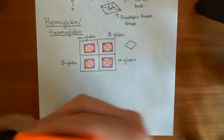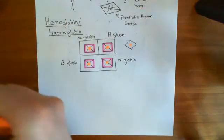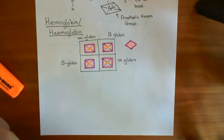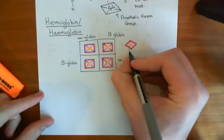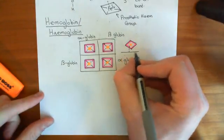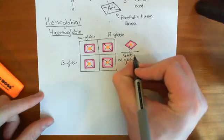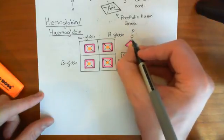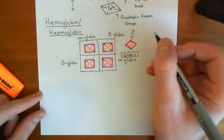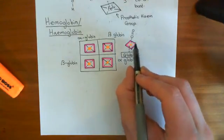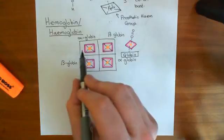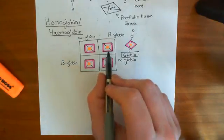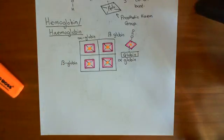There is an iron cation at the centre of the porphyrin ring. The fifth coordinate bond goes below and attaches to the globin protein subunit beneath. Now, oxygen atoms have lone pairs of electrons and can form the sixth coordinate bond with this ferrous cation at the centre of the porphyrin ring. Overall, you can get four oxygen atoms binding to a hemoglobin molecule — one to each of these four prosthetic heme groups.